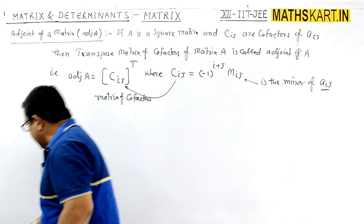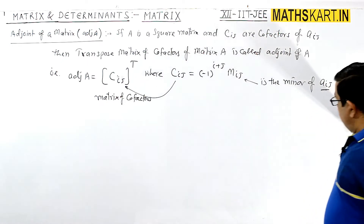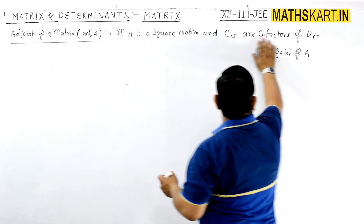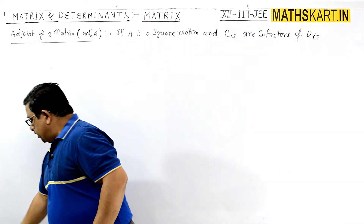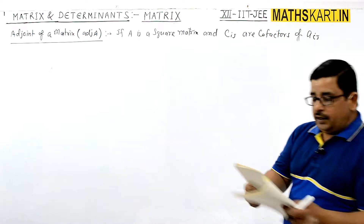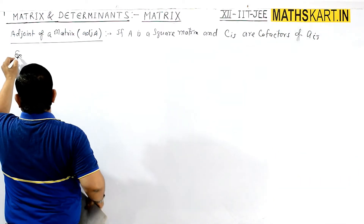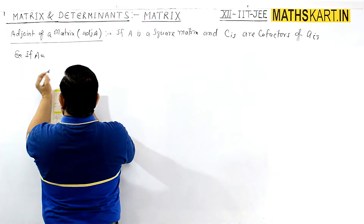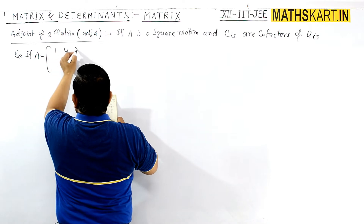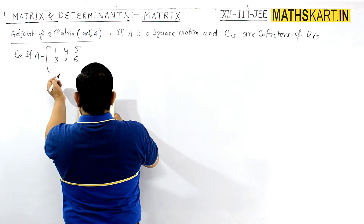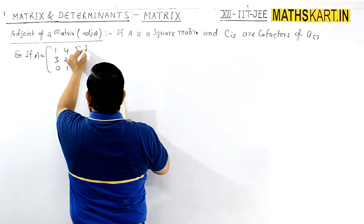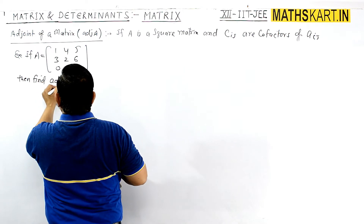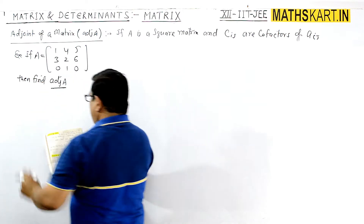We will take a direct example. Straight away, come to the example. If A equals the matrix with elements 1, 4, 5 in the first row; 3, 2, 6 in the second row; and 0, 1, 0 in the third row, then find the adjoint of A.